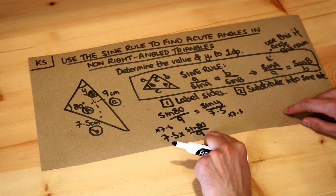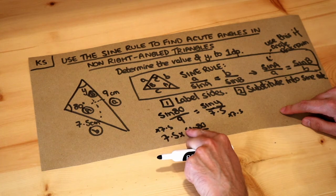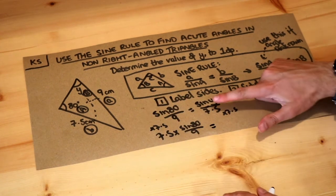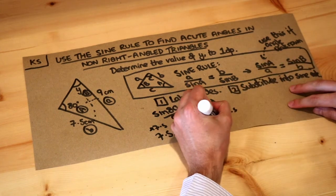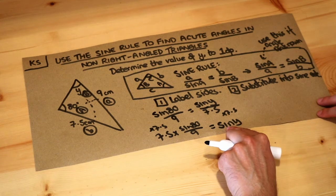So we're going to get 7.5 times by sine 80 over 9. If we wanted to, we could put the 7.5 at the top of the fraction—remember when you times a fraction by a non-fraction that non-fraction goes at the top. So we get 7.5 sine 80 all over 9, and then times in this by 7.5 gets rid of the over 7.5, leaving sine y.